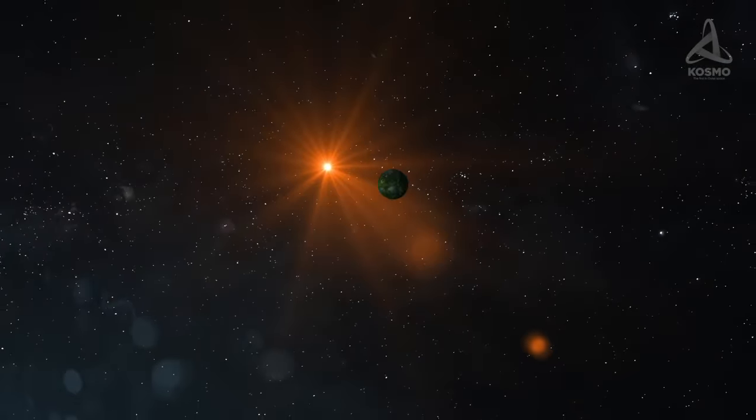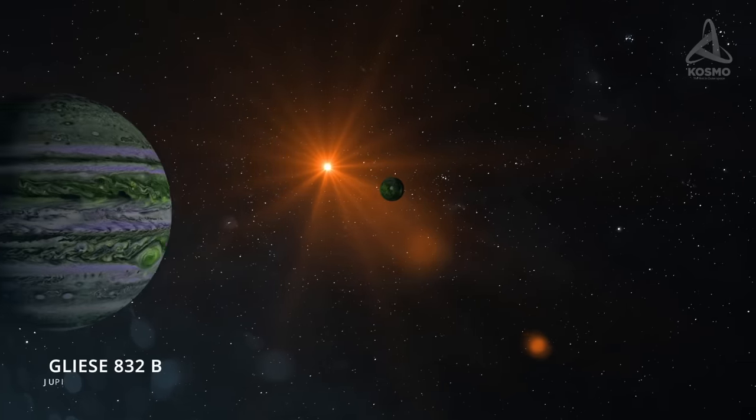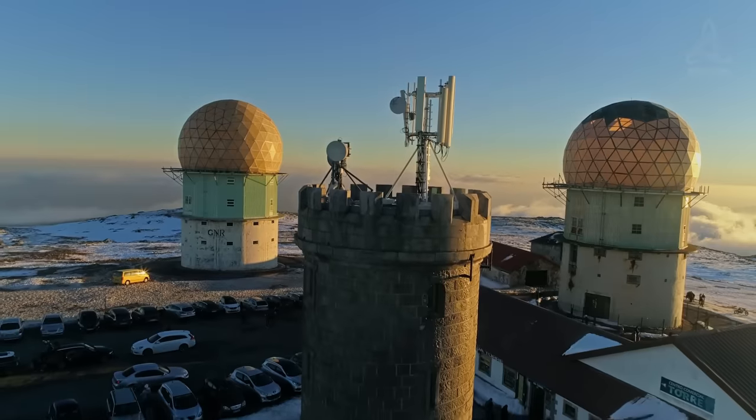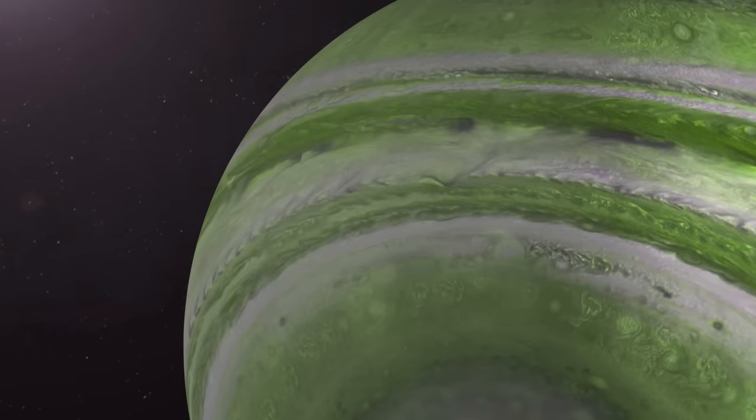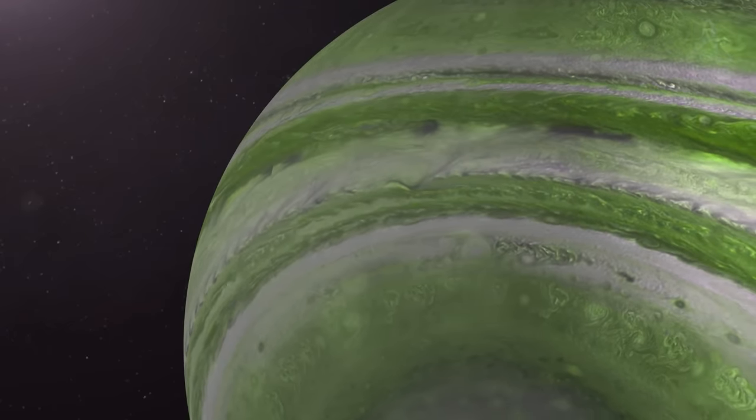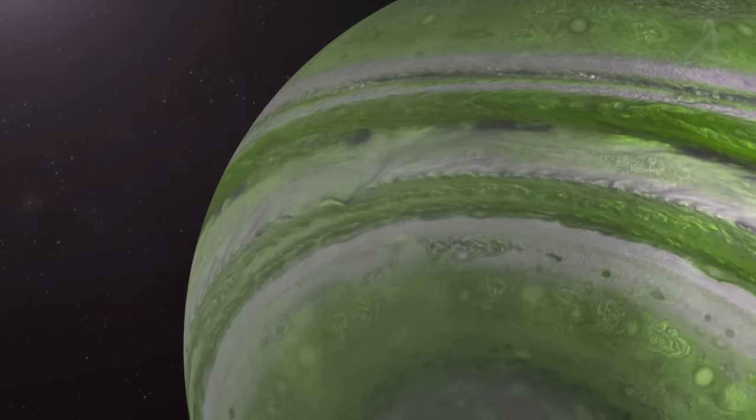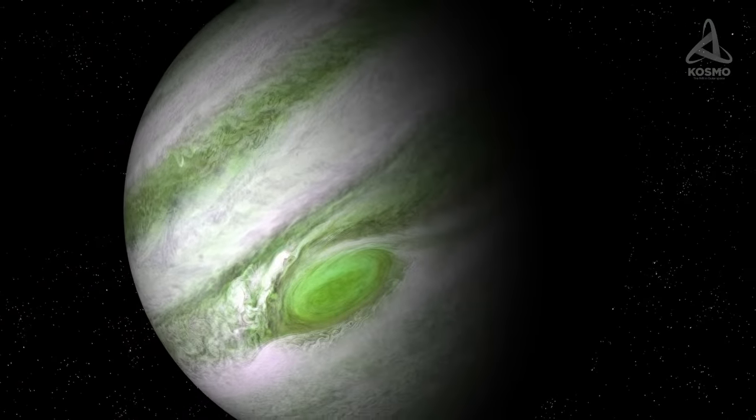There are two confirmed planets orbiting Gliese 832. In 2002, the Jupiter-like planet Gliese 832 b was discovered first. Astronomers announced the event in 2008. With the mass two-thirds that of Jupiter, the planet orbits its parent star at a distance of an average 3.4 astronomical units, completing a full orbit every 9.4 Earth years.